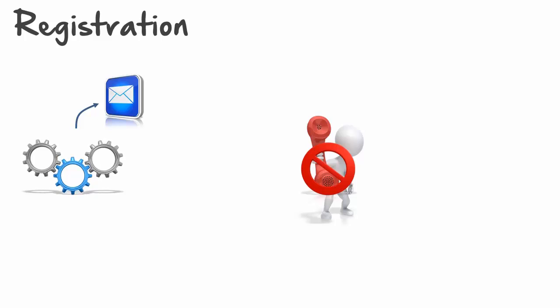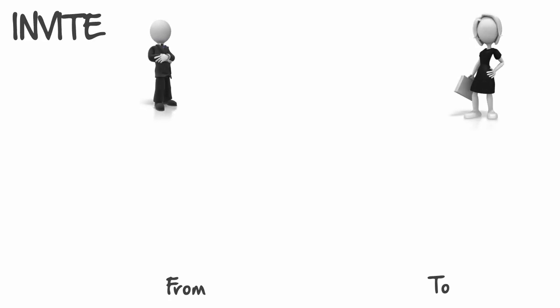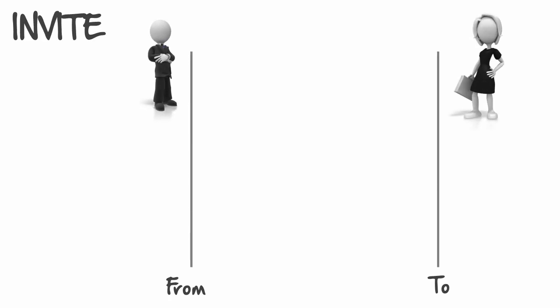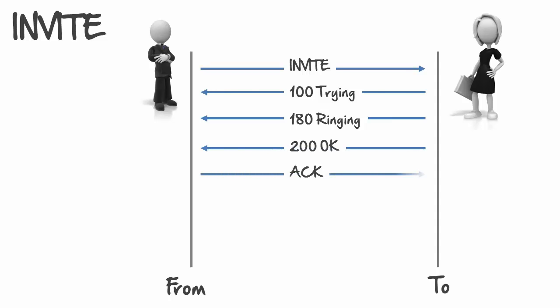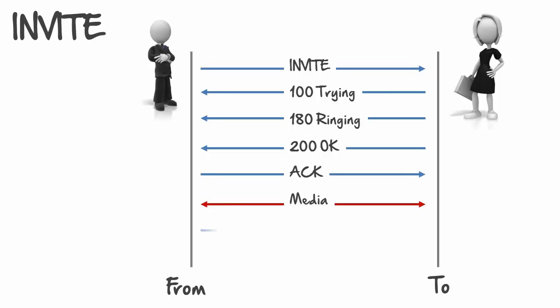The invite process is making the actual call. The invite goes out, we initially try the number, we send a 180 Ringing followed by the 200 OK. When we get acknowledgement back, the media will start flying. To wrap up, we send a BYE with another 200 OK, and that concludes the call from your end.